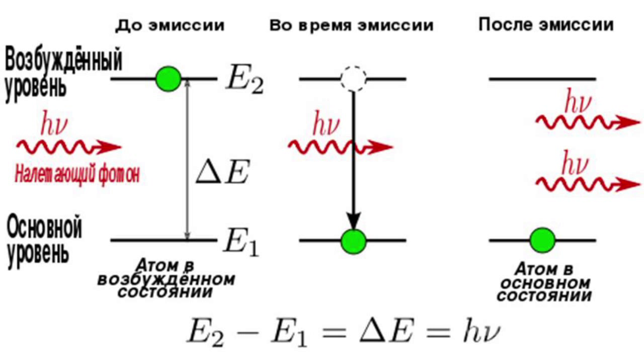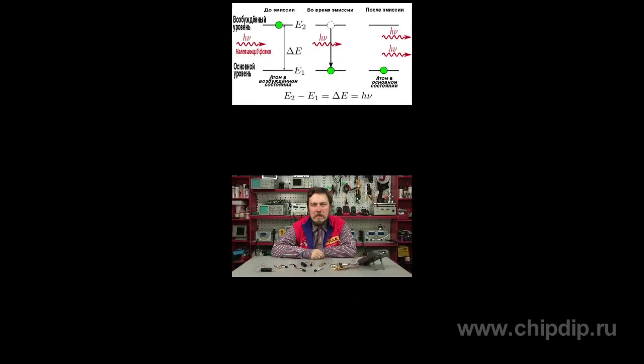The atom is influenced by a stimulating photon and moves to an excited energetic state E2. The atom can then reduce its energy and move to a stable state E1, emitting the excess energy — expressed as the difference between E2 and E1 — in the form of a photon. The created photon has energy, pulse, phase and polarization same as that of the stimulating photon. The latter is not absorbed, thus both photons are coherent.